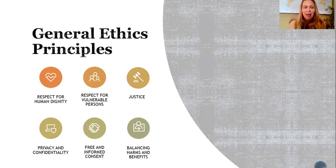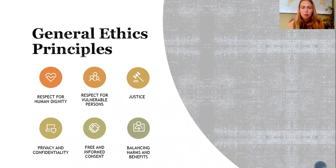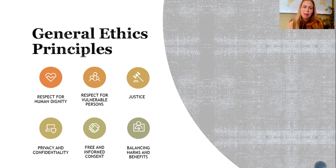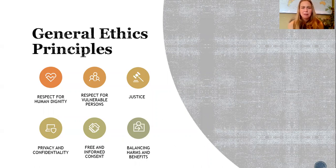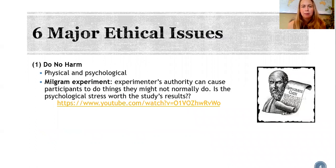In general, research ethics fall into three larger categories: respect for people, which means respect for human dignity and respect for vulnerable people in particular; concern for people's welfare, so people have to know that they have the right to free and informed consent and that their responses will be kept private and remain confidential; and justice, where research must be done in an honest and ethical way. All of this must ensure that we balance the harms and the benefits — the benefits of the research must always outweigh the harms.